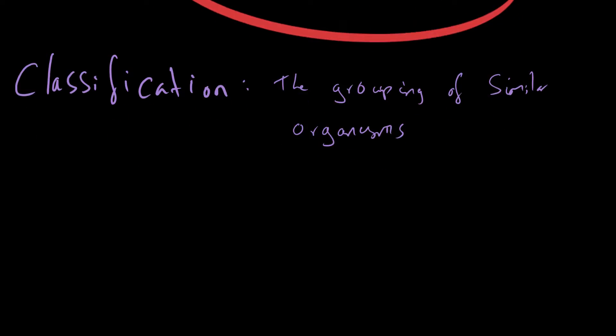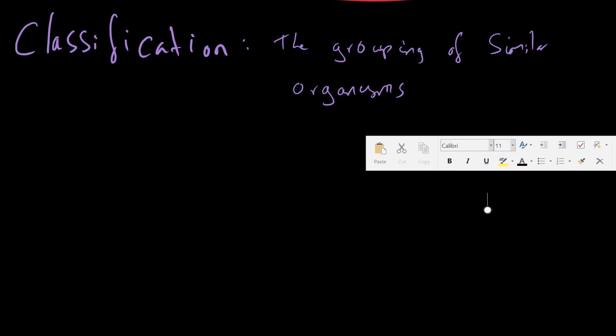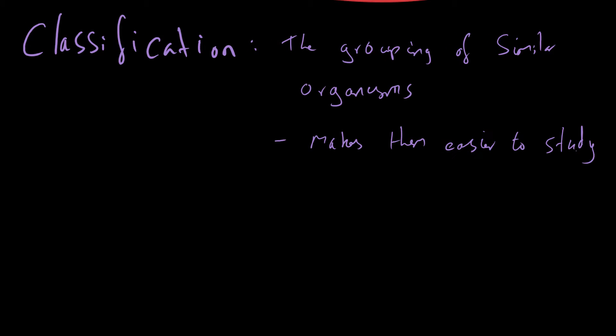So I've deliberately made this a very vague definition and that's because there are different ways of classifying organisms. Now the reason why we want to classify organisms is it makes them easier to study. This is because if you have groups of organisms that all share a lot of similar characteristics, you can make predictions on what unknown species may act like or what they may look like and it means that you can put them in nice groups and so we can study them more effectively.